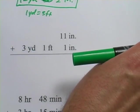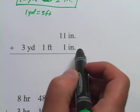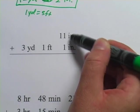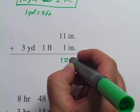Let's look at another one. In the first column, I have eleven inches and one inches, that adds up to twelve inches,